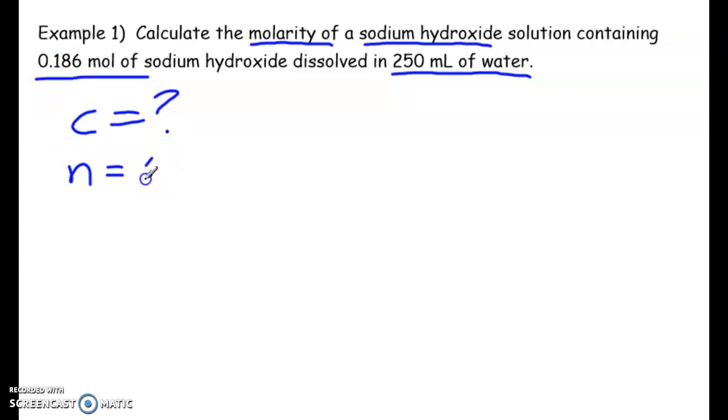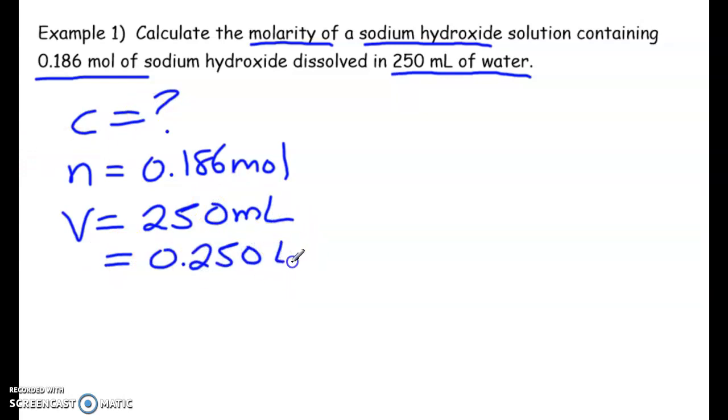We have the moles though, we have 0.186 moles. And the volume is 250 milliliters of water. And you should get into the habit of converting this right here, because we know concentration for molarity is moles per liter. So c is equal to n over v. So we're just going to simply plug this in. So this one's nice and straightforward.